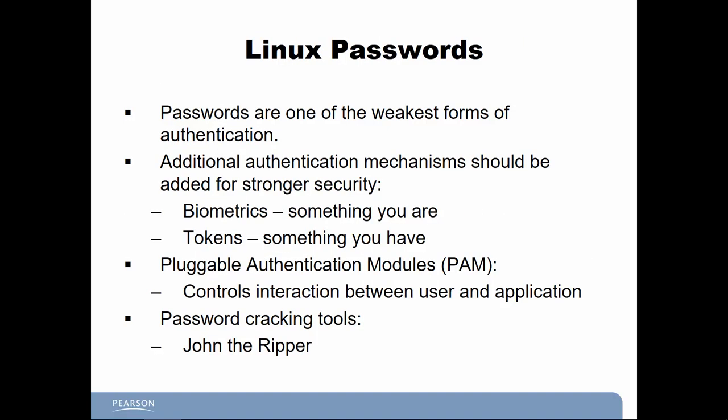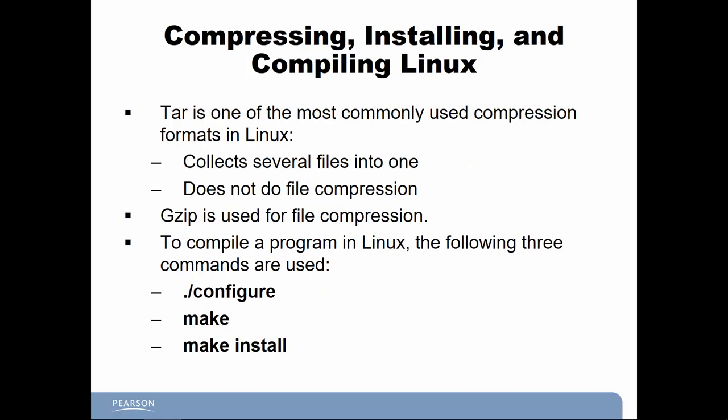Passwords are one of the weakest forms of authentication, so multiple authentication mechanisms can be used in conjunction, like biometrics, tokens, or a PAM (pluggable authentication module). Tools used to crack passwords include John the Ripper. For compressing files in Linux, TARs are one of the most commonly used formats, similar to zip or RAR in Windows, with gzip used for compression. To compile a program in Linux, three basic commands are used: ./configure, make, and make install.